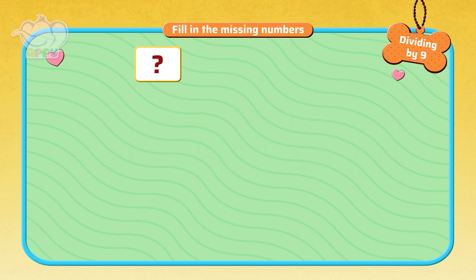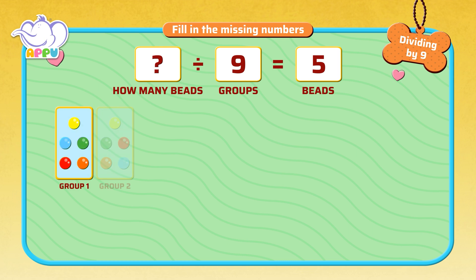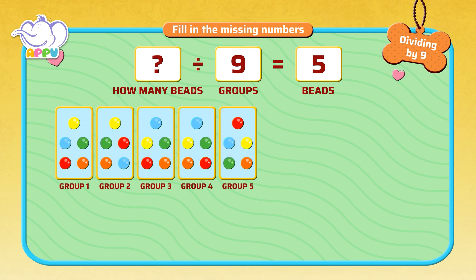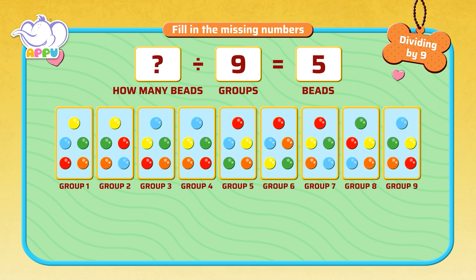We have to find out how many beads, when divided into 9 groups, gives us 5 beads. We know that 5 beads in 9 groups equals 45. How do we do this? We use multiplication that we learnt earlier.